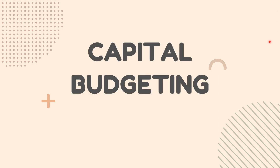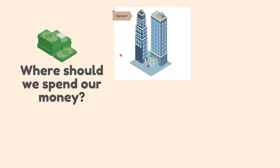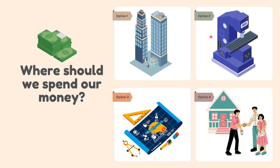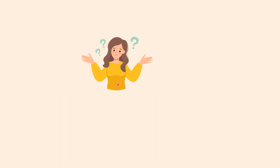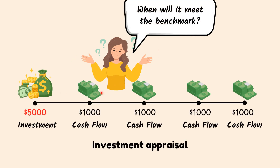What is Capital Budgeting? Capital budgeting is the process a business undertakes to evaluate potential major projects or investments. Construction of a new plant or a big investment in an outside venture are examples of projects that would require capital budgeting before they are approved or rejected. A company might assess a prospective project's lifetime cash inflows and outflows to determine whether the potential returns would meet a sufficient target benchmark.